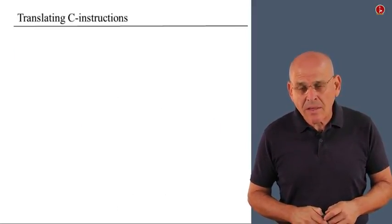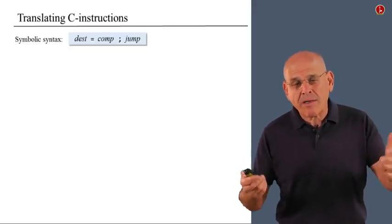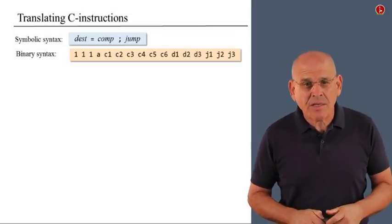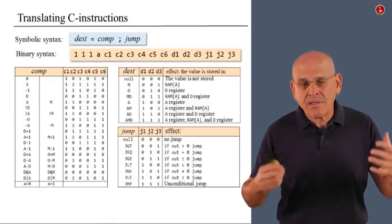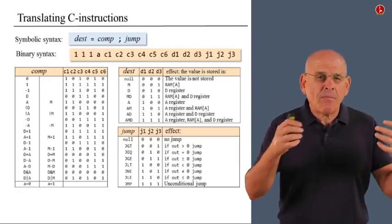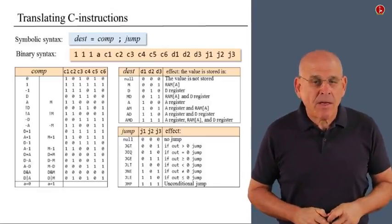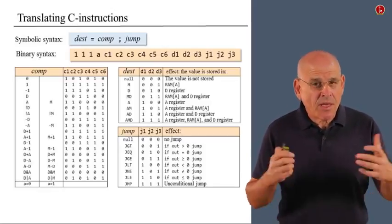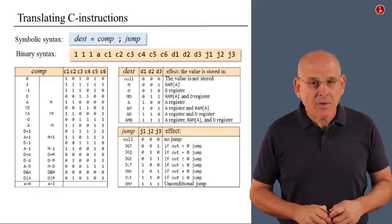All right, what about C instructions? Well, C instructions also have a symbolic manifestation and a binary manifestation. And there's a set of tables, so to speak, that describe the mapping from symbolic mnemonics into their binary representations. So, these are the rules of the game when it comes to translating C instructions.